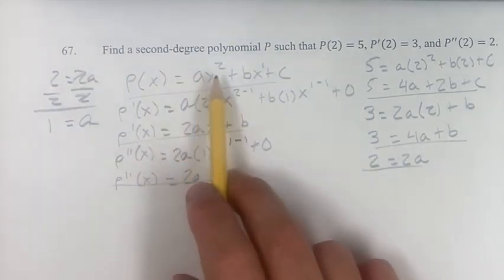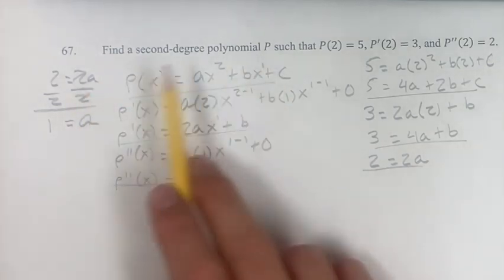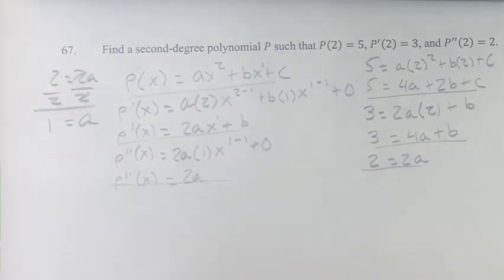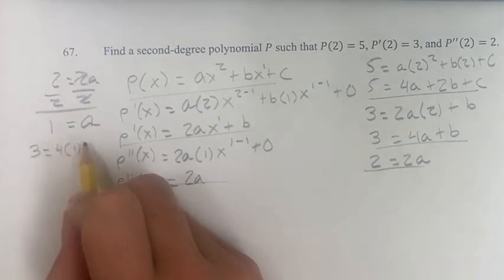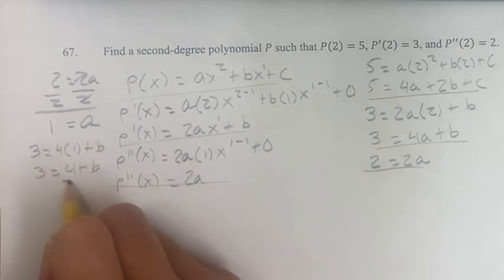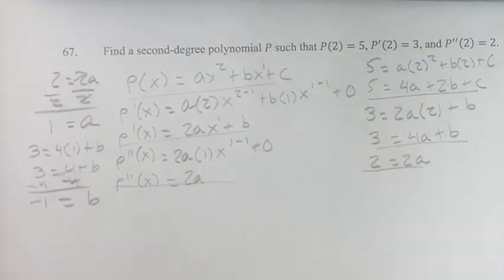And again, we're solving for A, B, and C, because then we'll have our full form of P, which is what we're looking for. We know what A is, and plug that into this equation and solve for B. So we get 3 is equal to 4 times A, which is 1, plus B. 3 is equal to 4 plus B, subtract by 4 on both sides. We get negative 1 is equal to B.